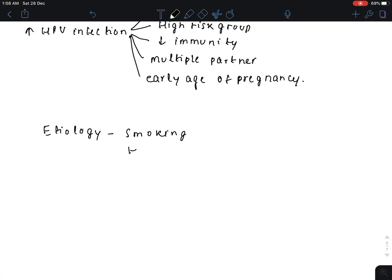In smoking, how does cervical cancer occur? It is due to exposure to polycyclic aromatic hydrocarbons.